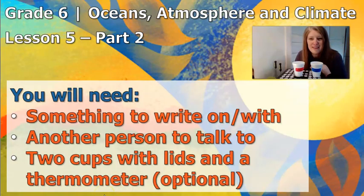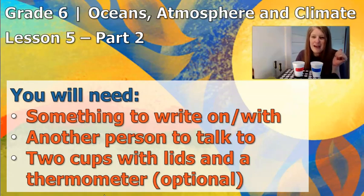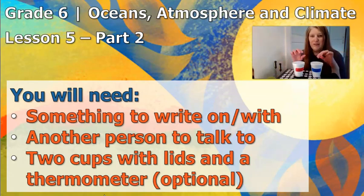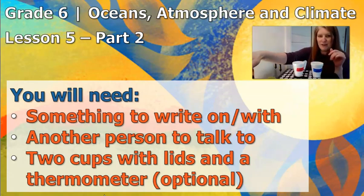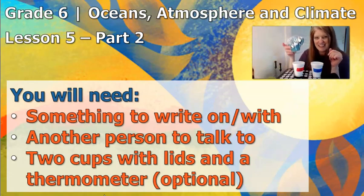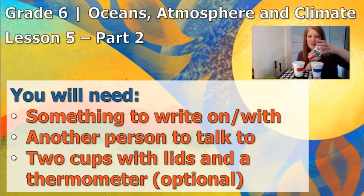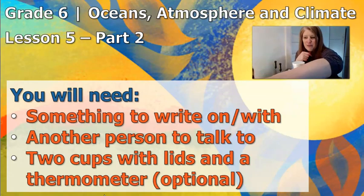Some of the things that you're going to need for this lesson are something to write on, something to write with, someone to talk to. There are also a couple of pieces of equipment that, if you have them at your house, you can join with me as I do this experiment. You'll need a couple of cups. I'm going to use foam cups, but if you don't have those — probably you don't because they're not legal to sell in Seattle — you could use a mug with some foil over the top. I have two layers of foil just to try to keep all of that warmth inside, so mugs work really well for that.